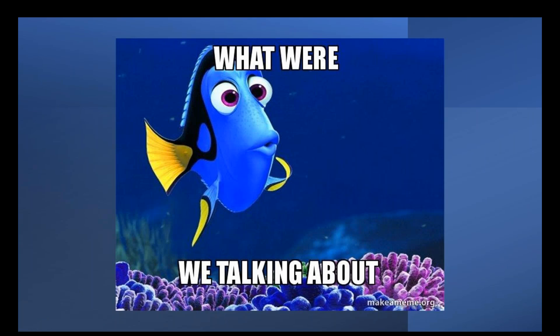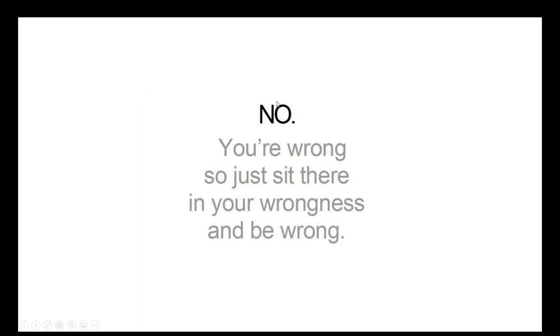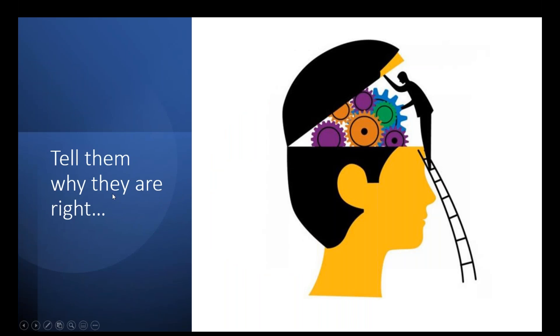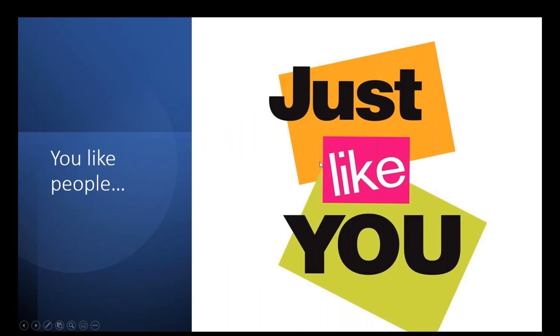That's right — so they forget the objection. We're creating real estate between when they give us the objection and when we overcome it, so they don't have to admit that they're wrong. Nobody wants to admit that they're wrong. So we're going to tell them they're right. We're going to climb into their head, because people like people just like themselves. When you tell them they're right, tell them that you think the way they think — they like you right away.